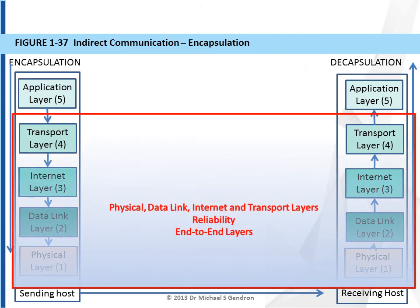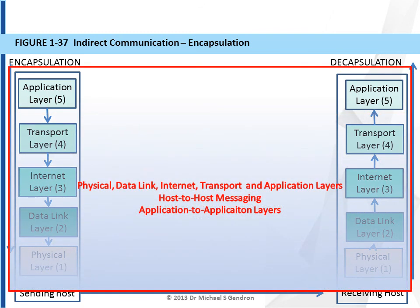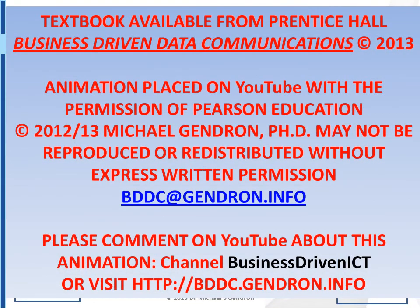Layer 4, the transport layer, is responsible for reliability. It is responsible for seeing errors from all the layers below it, as well as requesting retransmit when appropriate. Therefore, taken together, these layers are referred to as the end-to-end layers. Adding layer 5, the application layer, we wind up with the ability to do host-to-host messaging, and these can be referred to as the application-to-application layers.